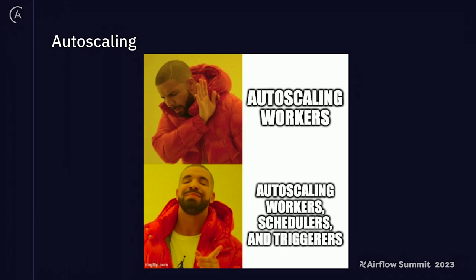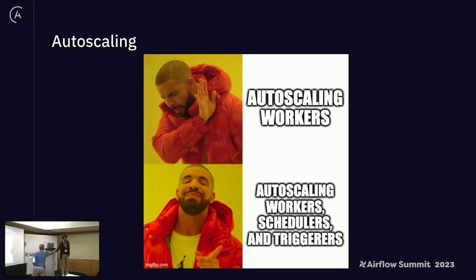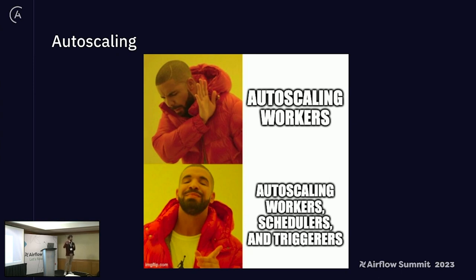Our key goal is to auto-scale everything. There are a lot of ways to auto-scale Airflow workers — different executors, fewer workers, Kubernetes spot instances — but as I said before, there's peak load across more than just workers: schedulers, triggerers, and more. With the hypervisor we can scale not just the workers but also the number of schedulers and triggerers to make sure your data arrives on time, every time.